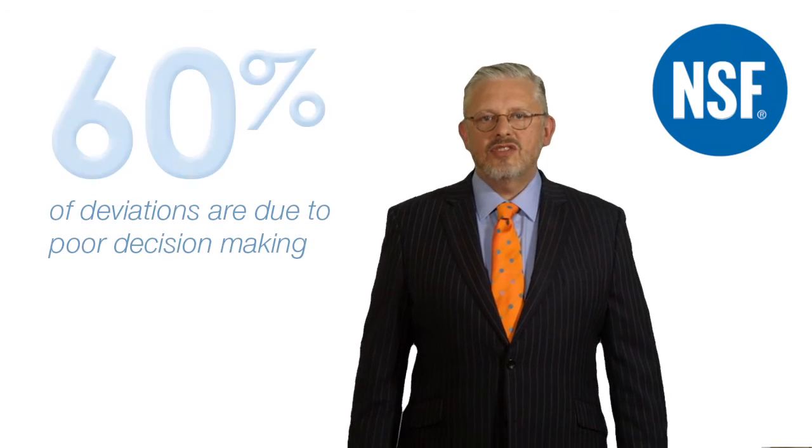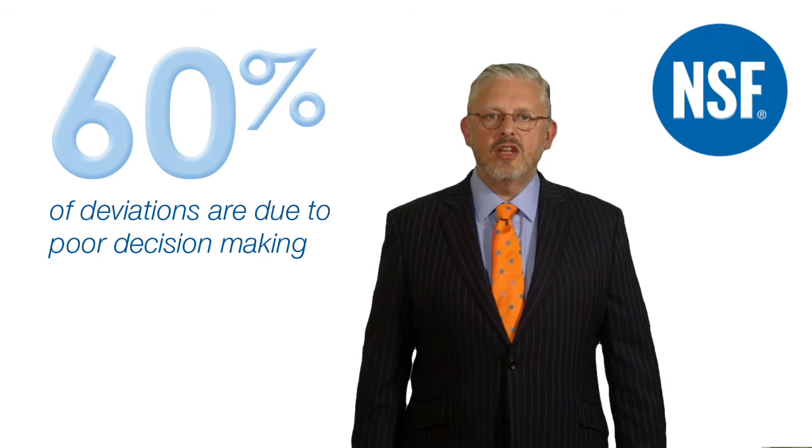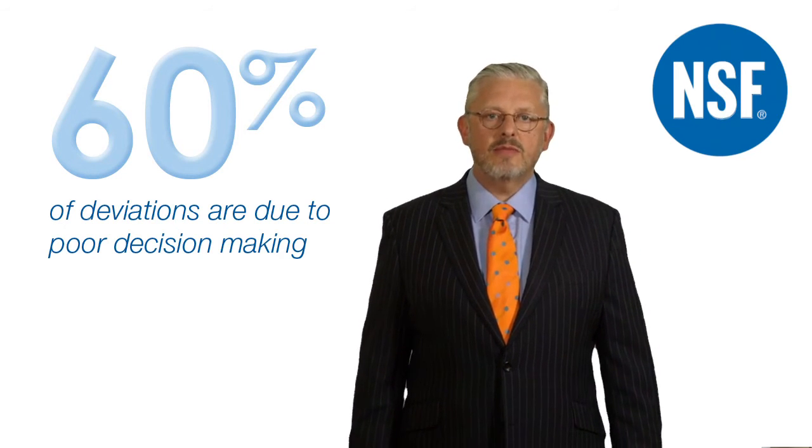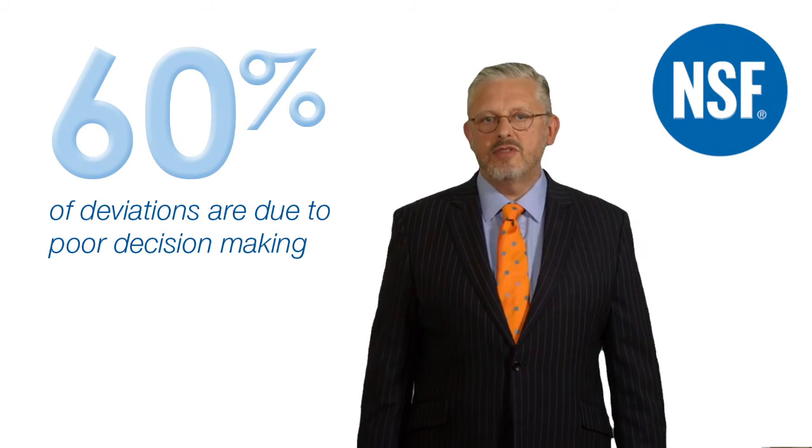Another major concern is how to know if aseptic behaviours are being maintained exactly as they were trained, especially at 2 o'clock in the morning, at weekends, or whenever staff work unobserved or unsupervised. Reliable and flawless execution of key processes is needed when manufacturing sterile products. Yet studies show that at least 60% of GMP deviations will occur due to poor staff decision making or unacceptable variation in the way a job is done.